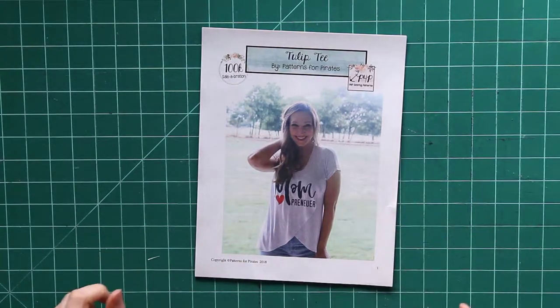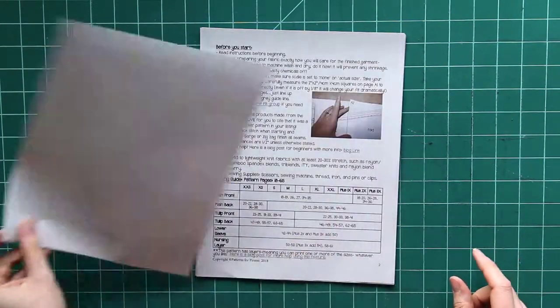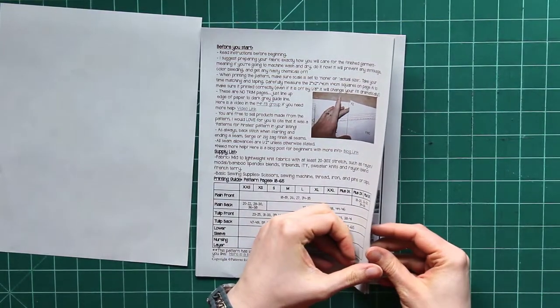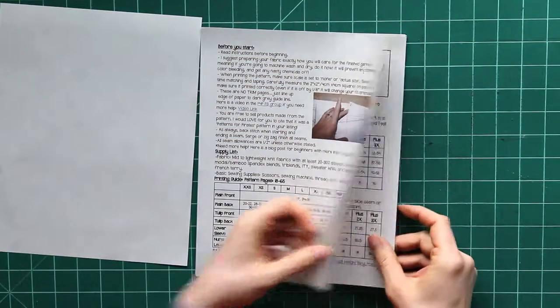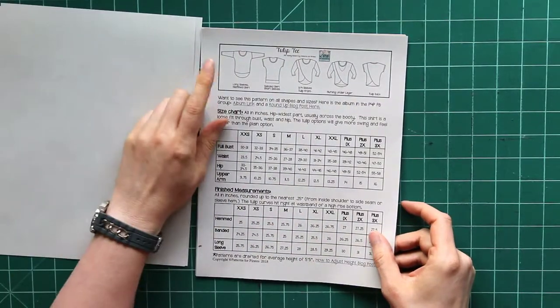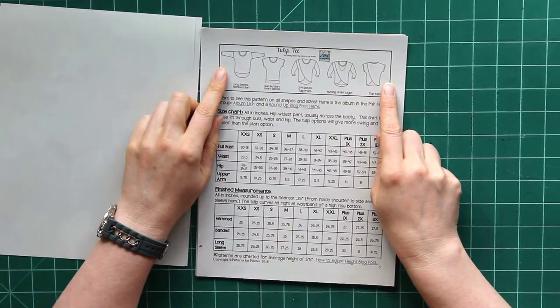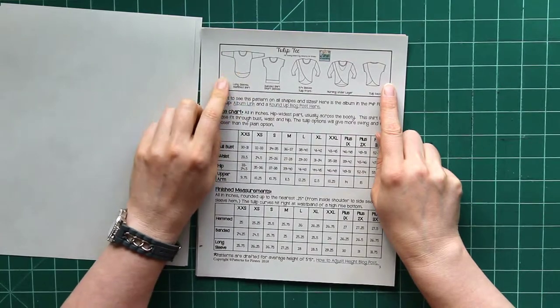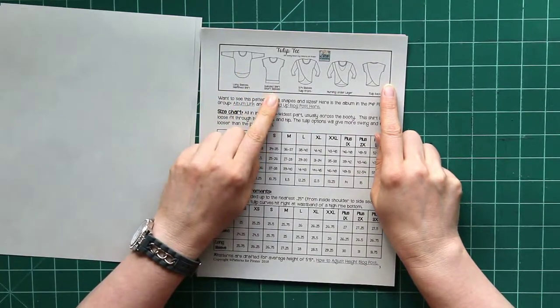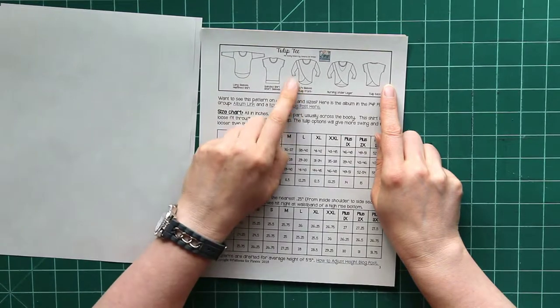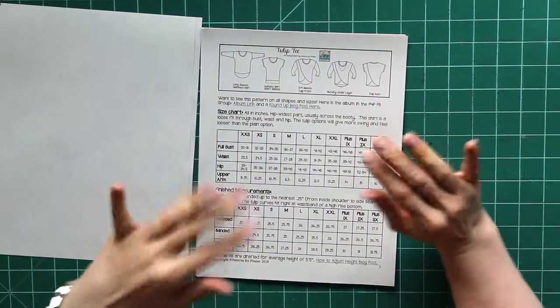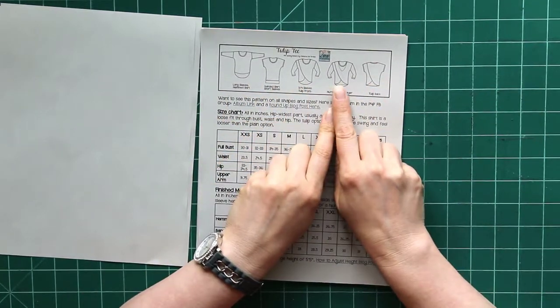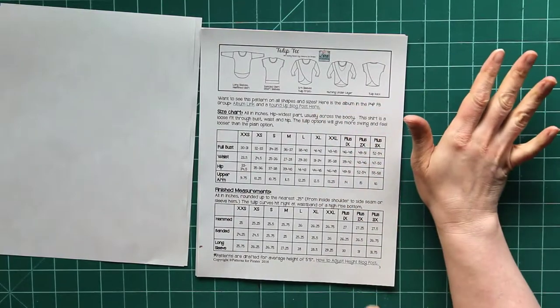All right. So here's the instructions. There's a couple of things that I just wanted to show you. The instructions look pretty straightforward. Now these are all the options that this pattern comes with. There's quite a few. So there's just a regular hemmed shirt that has a bit of a scooped hemline in the back. There's a bandage shirt. There's long sleeve, short sleeves, and three quarter sleeves. So you can mix and match your sleeve with whichever style of shirt you like. There is the tulip front and then there is the nursing under layer as well. So lots of options with this pattern.